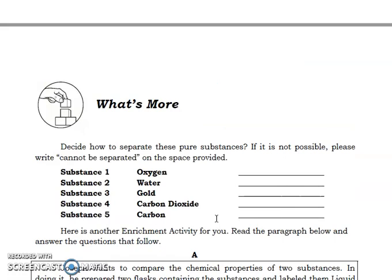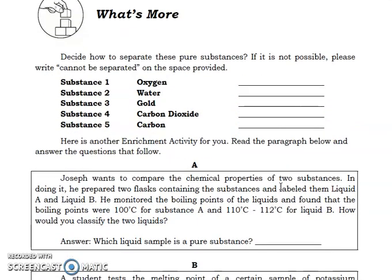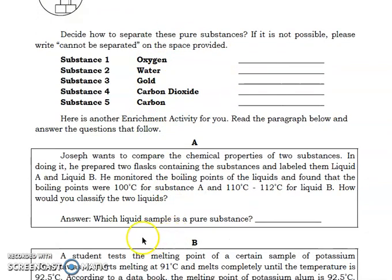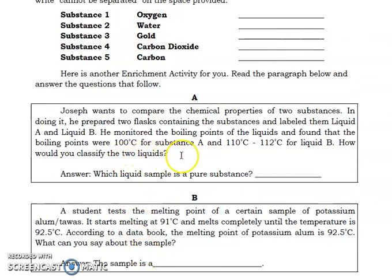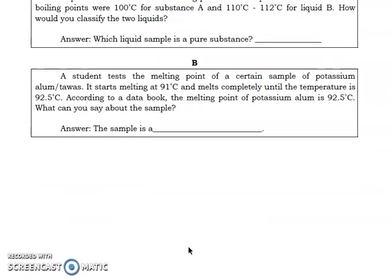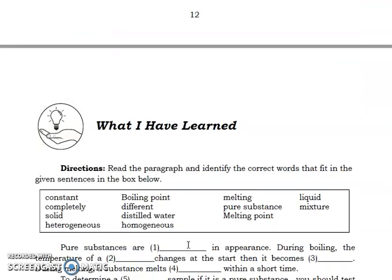What's More? Here, you will just decide how to separate the given pure substance. If it's not possible, you will just write the word cannot be separated on the space provided. If you know the way or technique on how to separate the pure substance, you will just write it down here on the blank. Or you can just write down numbers 1 to 5 and then write down the technique. If it's not possible, write the word cannot be separated. For another enrichment activity for the What's More, you will just answer the following question based on the given paragraph. You have to read the paragraph carefully to answer the given question. That is for the part of the What's More. That's the fifth activity.